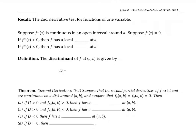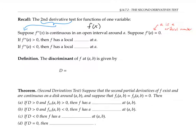In calculus one, we had a second derivative test for functions of one variable. Suppose we have a function f of x, and its second derivative is continuous in an open interval around the x value of a. Suppose also that f prime of a is zero — in other words, a is a critical number. Then if the second derivative at a is positive, f has a local minimum at a (it's concave up). If f double prime is less than zero, then f has a local max at a (it's concave down).